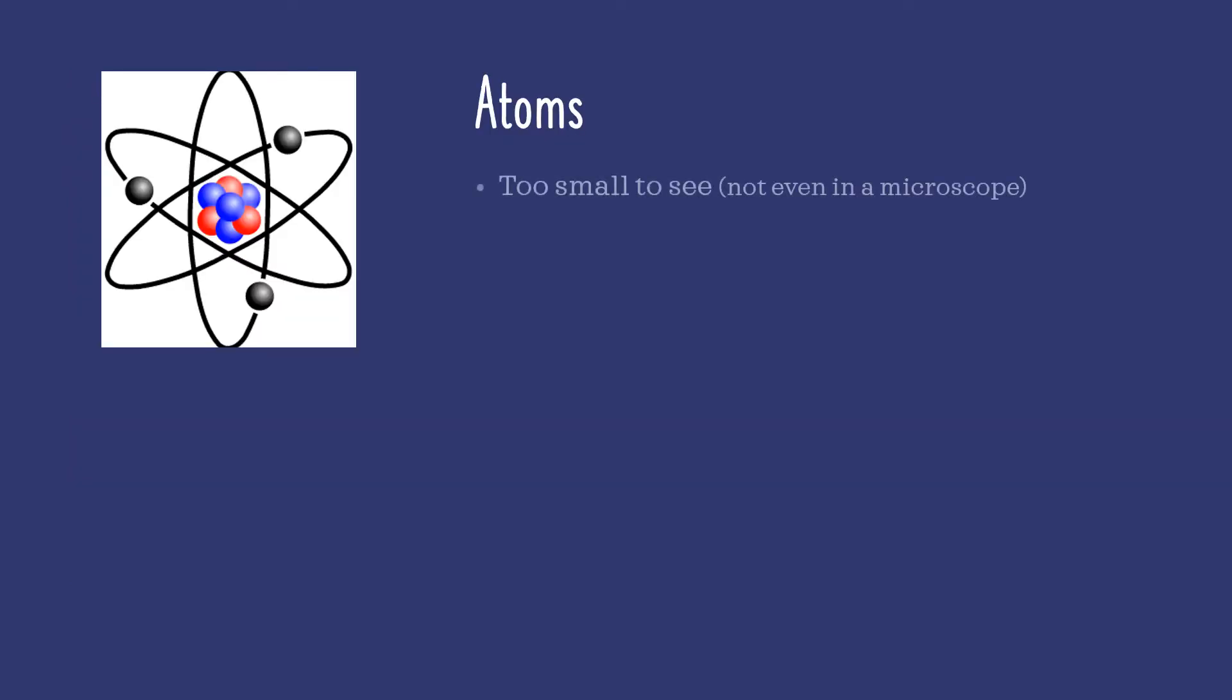Atoms are extremely small, so small that you cannot see them in a microscope. They are comprised of multiple components which we call subatomic particles.